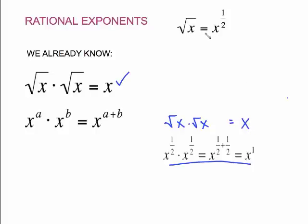Now it's easy to make this conversion. Think of this as x to the first power. When dealing with a square root, the index is understood to be 2. So the 1/2 comes from: the inside power goes to the numerator, and the index goes to the denominator.